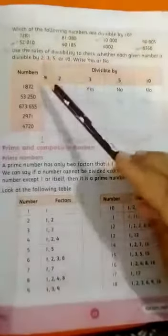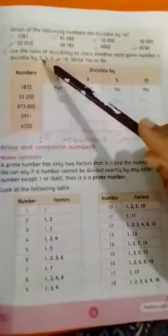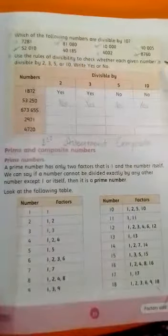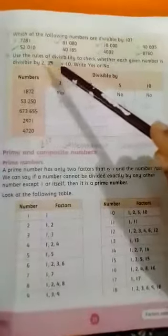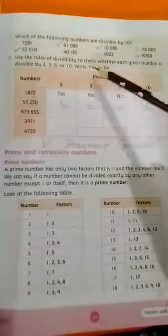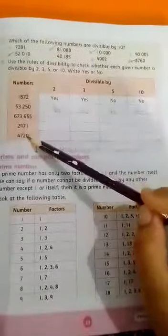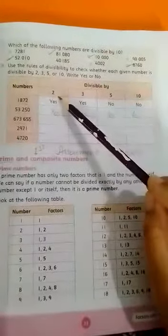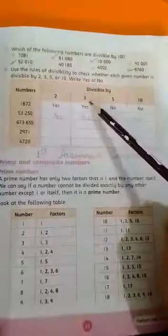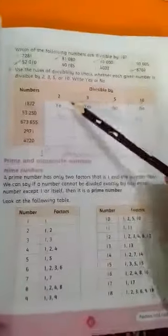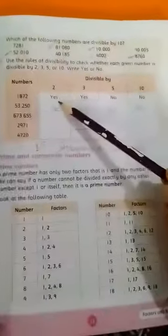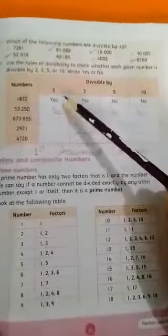Next question 8, students. Use the rules of divisibility to check whether each given number is divisible by 2, 3, 5 or 10. Write yes or no. We have given some numbers here and asked in the table whether it is divided by 2. Yes or no. If it happens, we will write yes. If it doesn't, we will write no.